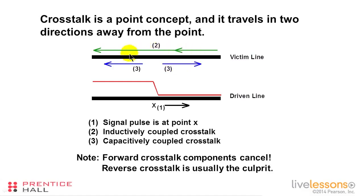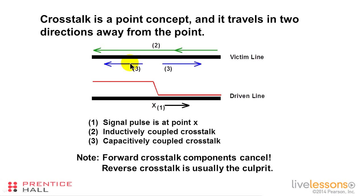The crosstalk signal is the combination of these two signals. The forward crosstalk components tend to cancel. We have one signal going in the forward direction — that's the inductively coupled signal — and one going backward — the capacitively coupled signal. If those two signal components happen to be equal and opposite, they cancel. The most common way this happens is in a stripline environment where the environment is homogeneous and uniform. So it is usually the backward crosstalk component that is a problem on our circuit boards.